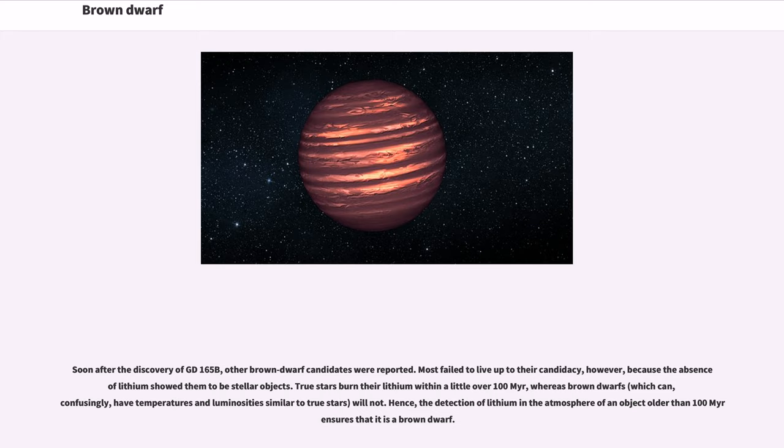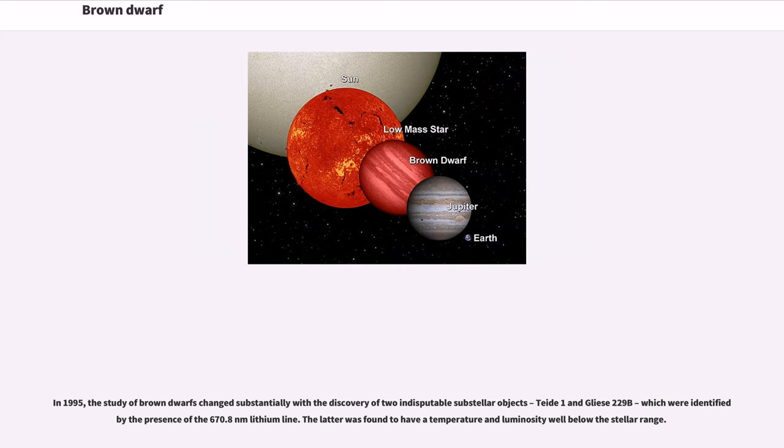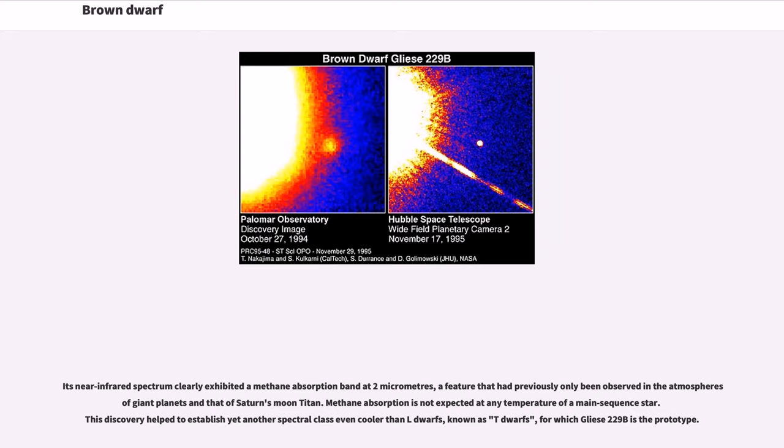In 1995, the study of brown dwarfs changed substantially with the discovery of two indisputable substellar objects, Teide 1 and Gliese 229B, which were identified by the presence of the 670.8 nanometer lithium line. The latter was found to have a temperature and luminosity well below the stellar range. Its near-infrared spectrum clearly exhibited a methane absorption band at 2 micrometers, a feature that had previously only been observed in the atmospheres of giant planets and Saturn's moon Titan. This discovery helped to establish yet another spectral class even cooler than L dwarfs, known as T dwarfs, for which Gliese 229B is the prototype.